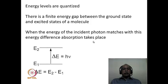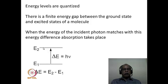According to quantum mechanics, energy levels are quantized — whether electronic, vibrational, or rotational. The energy gap between the ground state and excited state is finite. When the energy of the incident photon matches the energy difference ΔE between the ground and excited state — where ΔE = hν — absorption takes place. If the photon frequency does not match this criterion, absorption will not occur.